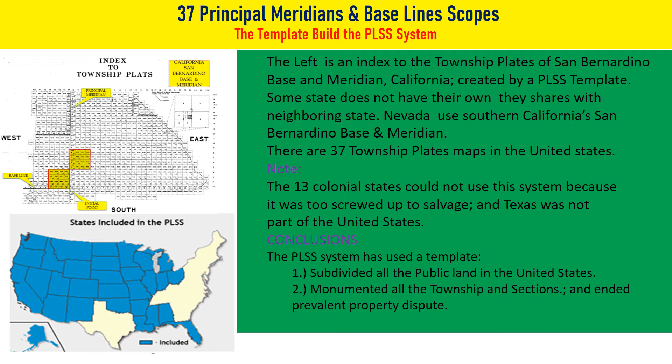However, the 13 colonial states could not use this system because it was too disorganized, and Texas was not part of the United States land. The takeaway of this section is that the government used a template to subdivide public land in an orderly and uniform manner without having to invent a new system each time it subdivided the land.